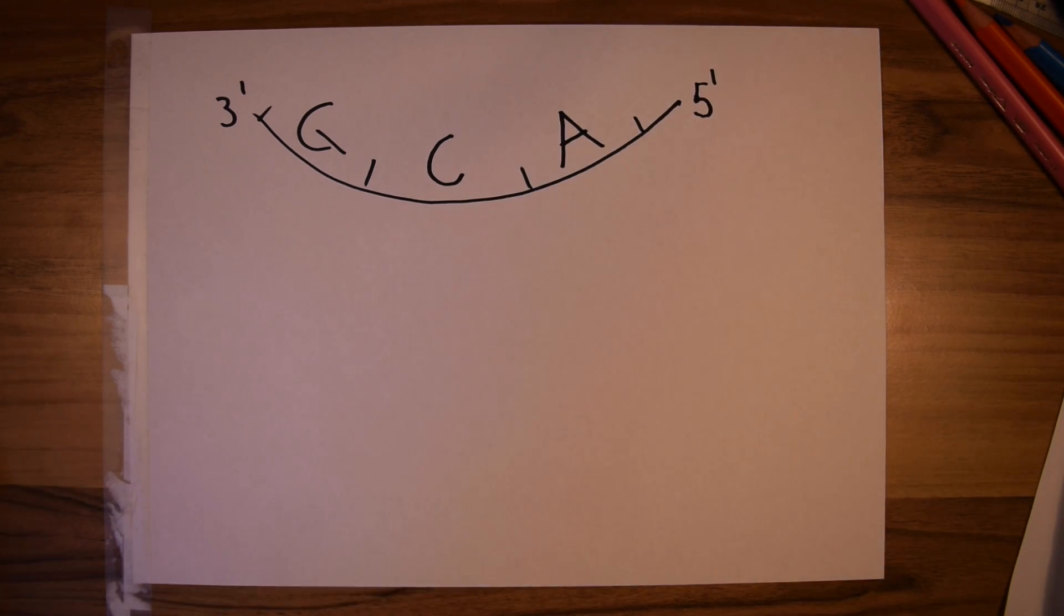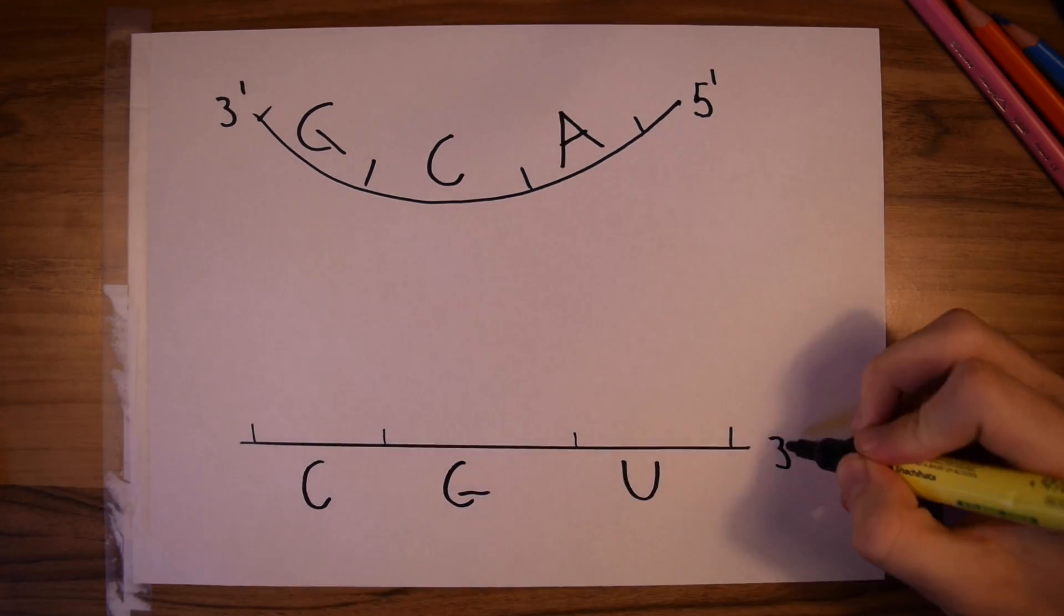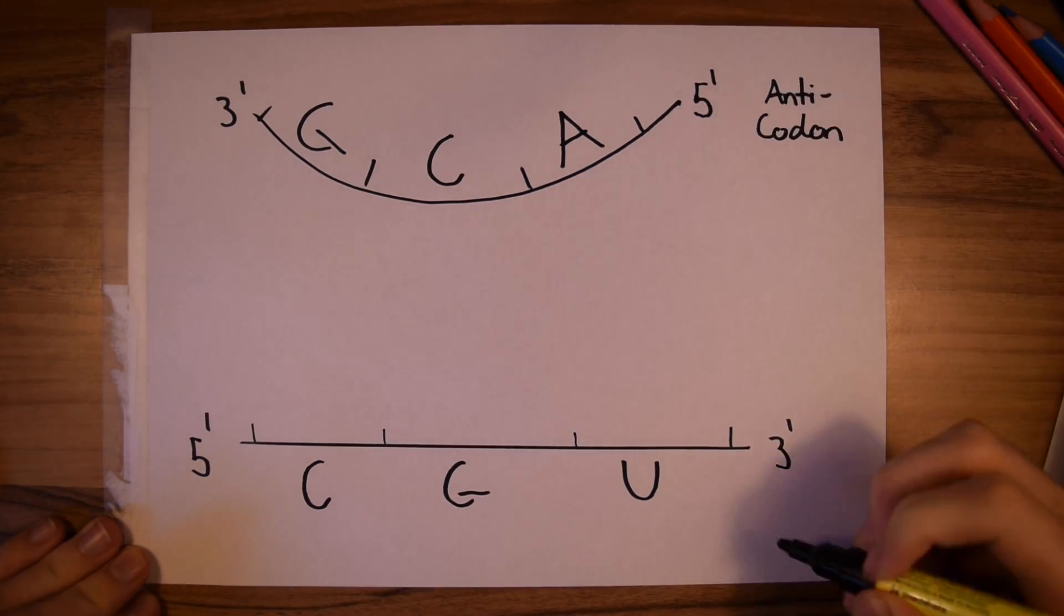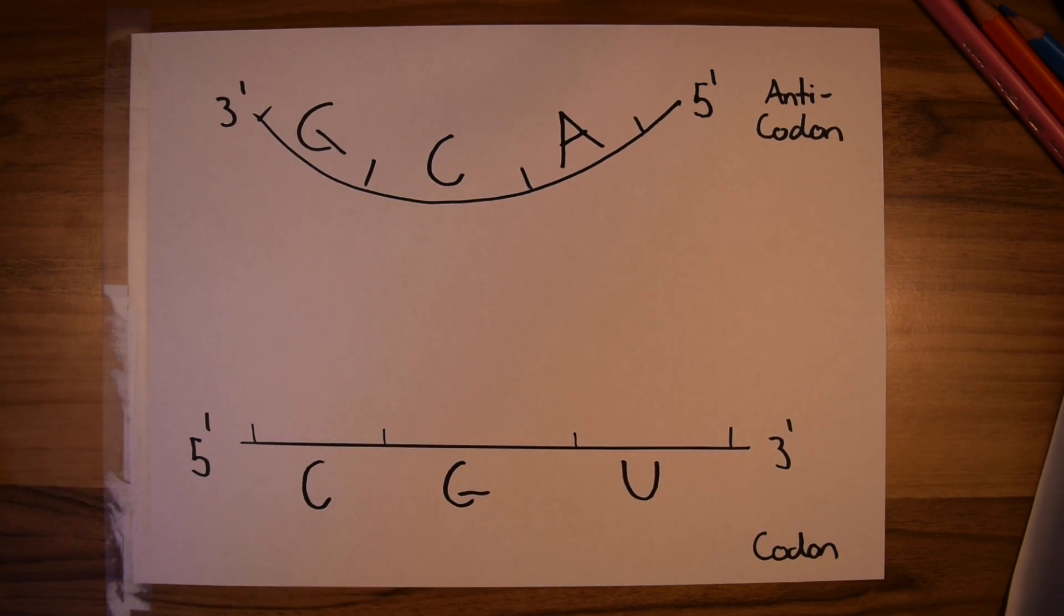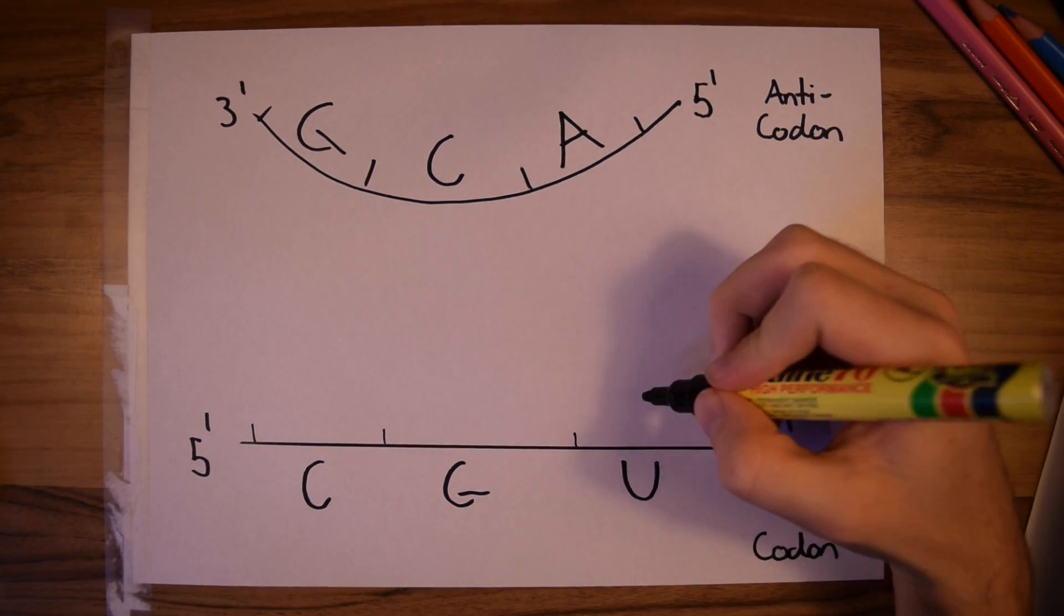So now we're just going to take a closer look at the codon and anticodon interaction. We can see that the anticodon is reading the mRNA. This interaction takes place via hydrogen bonding between the bases.